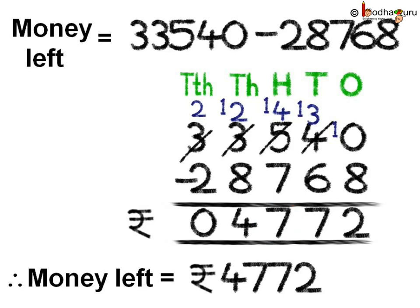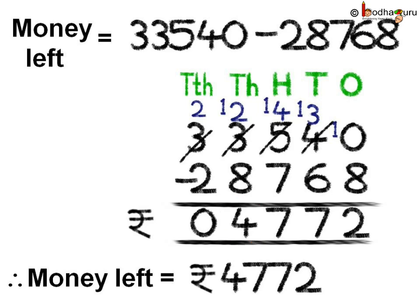Now, coming to the thousands place, we need to do 2 minus 8. Since 8 is more than 2, we need to borrow again, borrowing from the ten-thousands place. So at the ten-thousands place, 3 becomes 2 after lending. Now at the thousands place, we have 12. 12 minus 8 is 4. Lastly, at the ten-thousands place, 2 minus 2 is 0. So the answer is 4,772. Thus, money left after building the school library was 4,772 rupees.